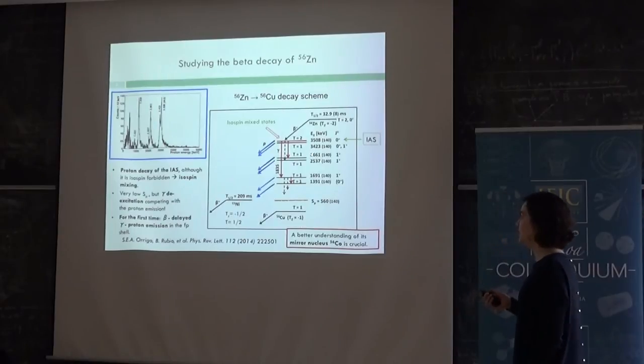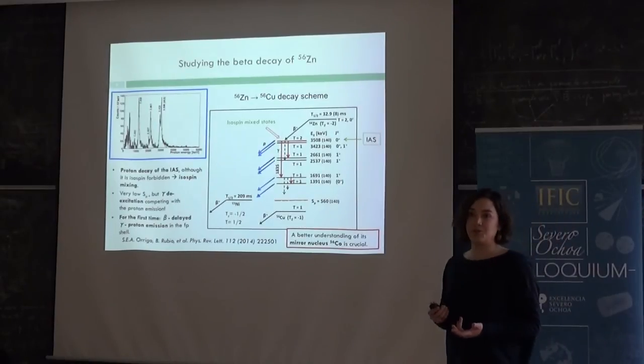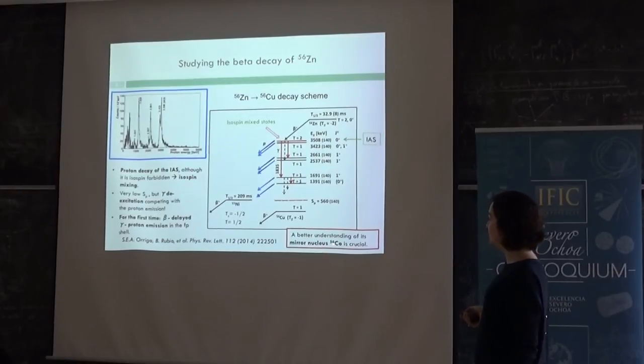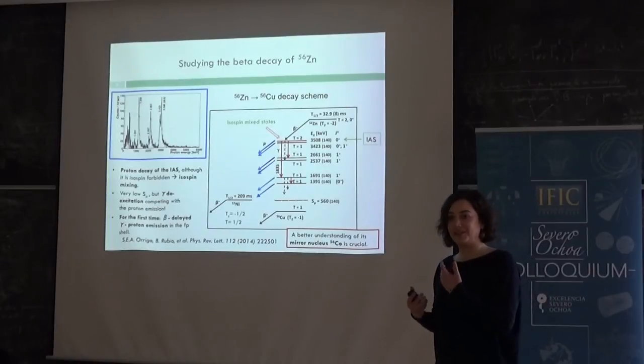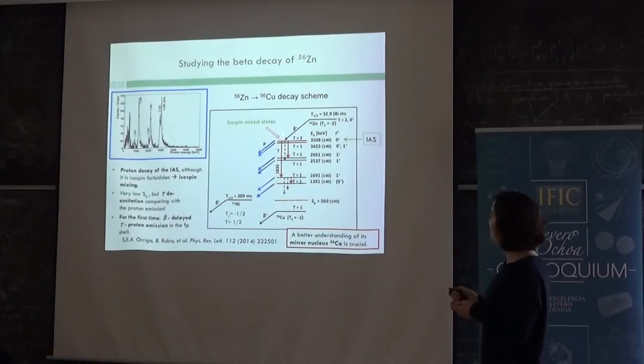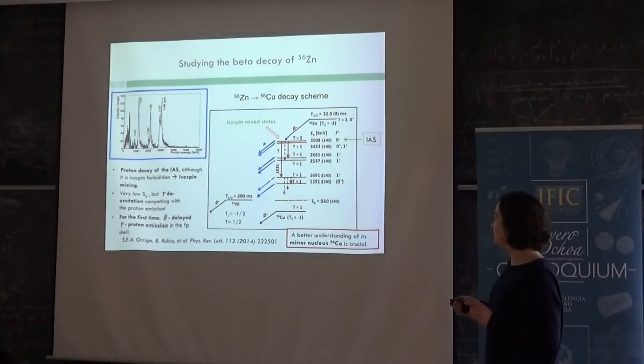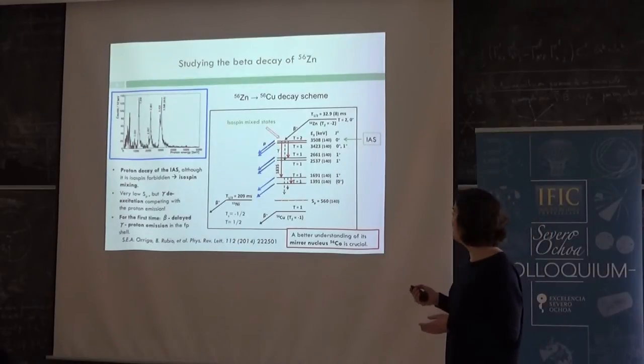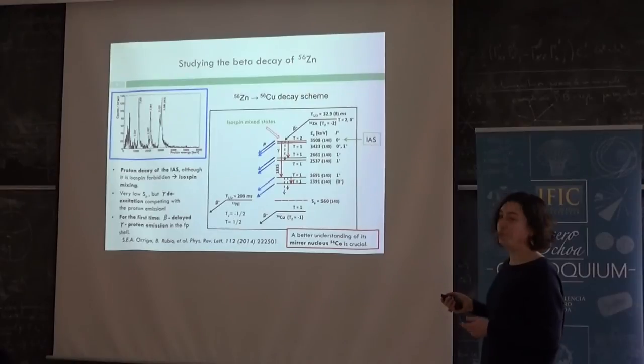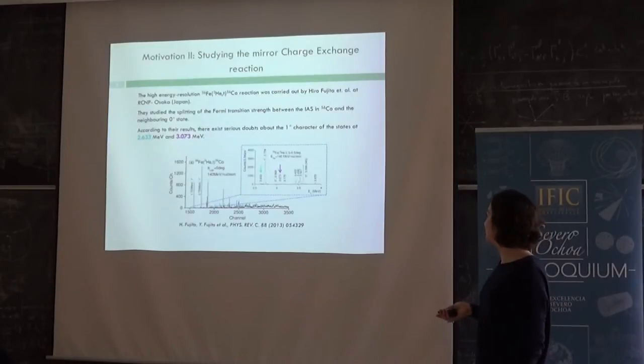Because here there are things and open questions, things that we don't understand, so studying its mirror nucleus, which is 56-cobalt, is very interesting. Because as I explained, it can give us information. And for example, maybe because of the low statistics, some gammas that were supposed to be here were not seen. And these solid arrows are gammas that were seen in the experiment, but not the dashed lines that we know that they are in 56-cobalt nucleus from previous experiments.